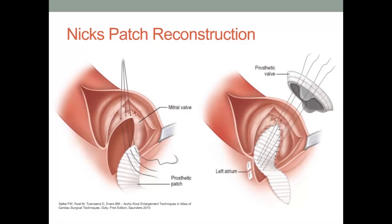Interrupted sutures without pledgets are suggested for accuracy and strength. At the level of the aortic annulus, the interrupted sutures with pledgets are placed and passed first through the patch and then through the sewing ring of the prosthesis. The remainder of the valve sutures are subsequently placed through the annulus and sewing ring in standard fashion. If the left atrial wall is flexible and the defect is small, the left atrial wall can be approximated directly to the patch. Otherwise, a second patch is fashioned to reconstruct the left atrial defect.